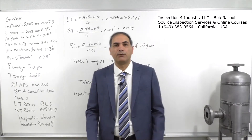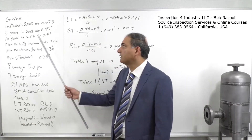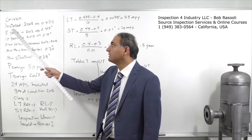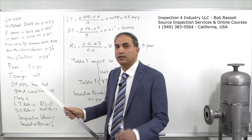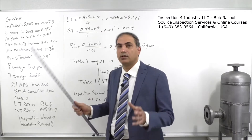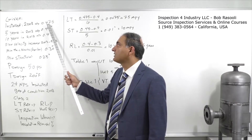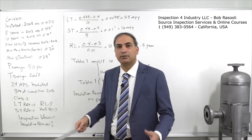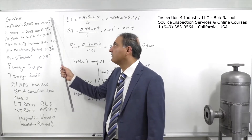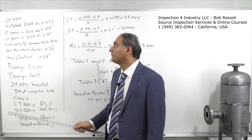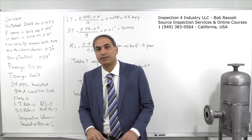We're going to look at an API 570 example problem. The piping system was installed in 2008 and the initial thickness recorded at one CML when the pipe went into operation was 0.475 inches. Five years later in 2013, after the piping system went into service, they made a thickness measurement at the same CML.